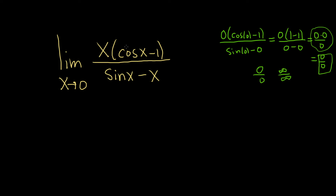L'Hôpital's rule says you can take the derivative of the top and the derivative of the bottom. The derivative on the top is going to require the product rule, so let me refresh your memory. The product rule says if you have two functions f and g, the derivative equals the derivative of the first times the second, plus the first times the derivative of the second.